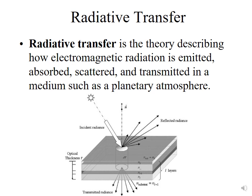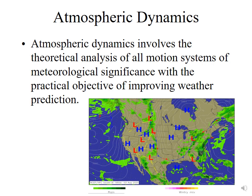Radiative transfer is really trying to understand how radiation, or electromagnetic radiation, is emitted, absorbed, scattered, and transmitted through the atmosphere and inside the atmosphere. And atmospheric dynamics is really trying to understand the motion of the wind and the air and the weather systems. If you have a good understanding of atmospheric dynamics, it allows you to be able to predict the weather into the future.